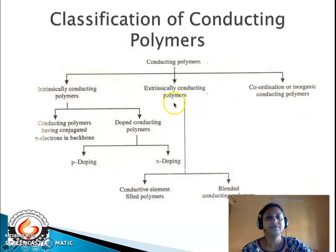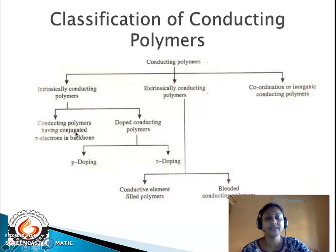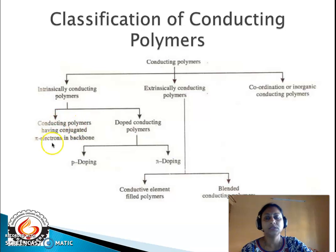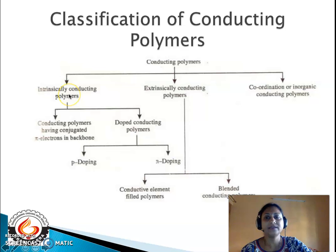Conducting polymers are classified into three categories: one is intrinsically conducting polymers, second is extrinsically conducting polymers, and third is coordination or inorganic conducting polymers. Under intrinsically conducting polymers are polymers having conjugated pi electrons in the backbone — a series of single and double bonds. The pi electrons, being more labile than sigma electrons, are responsible for the conducting properties.